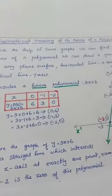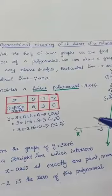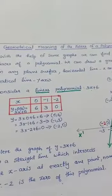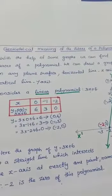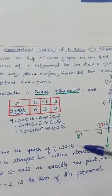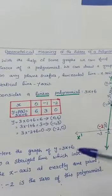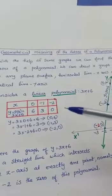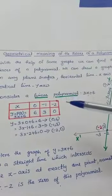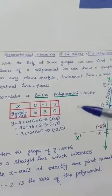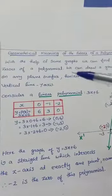Geometrical meaning of the zeros of a polynomial: how to find the zeros of a polynomial geometrically with the help of graphs. We can draw a graph on any plane surface. The graph helps to show the relationship between any two factors, for example, time and distance, age group and monthly wages, etc.